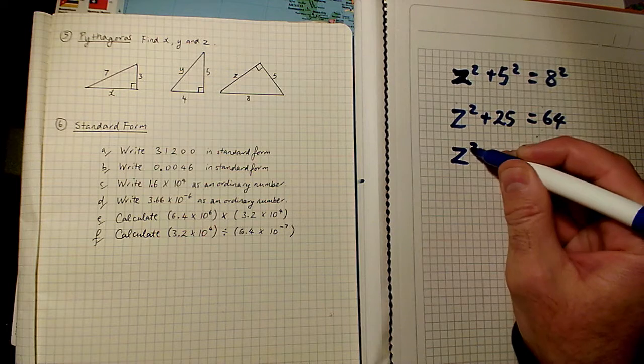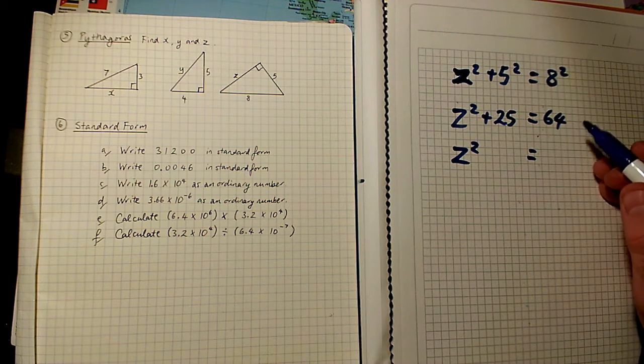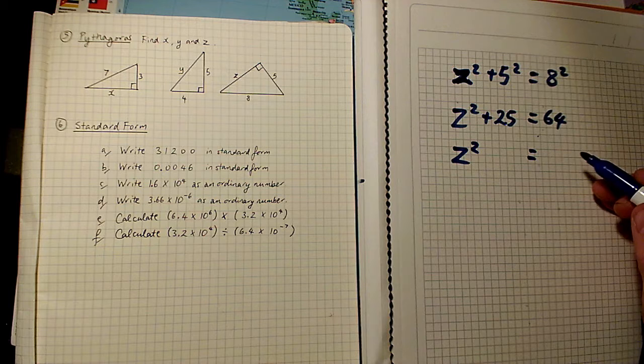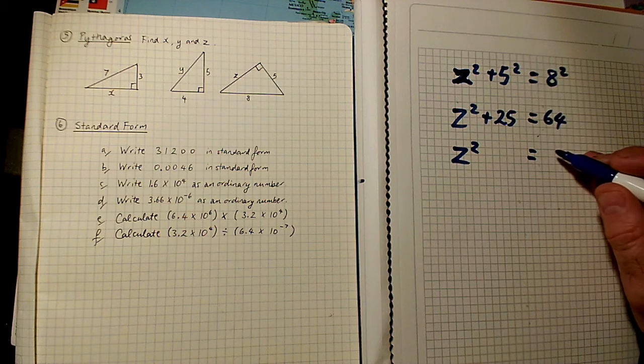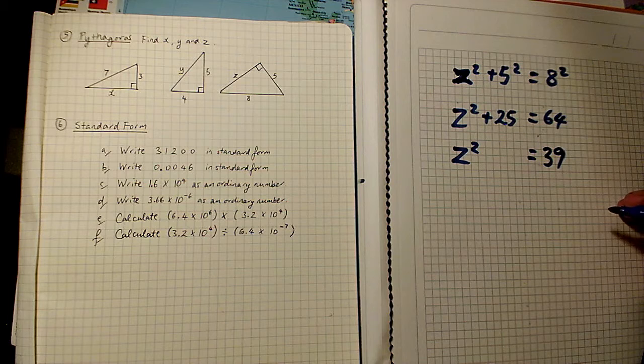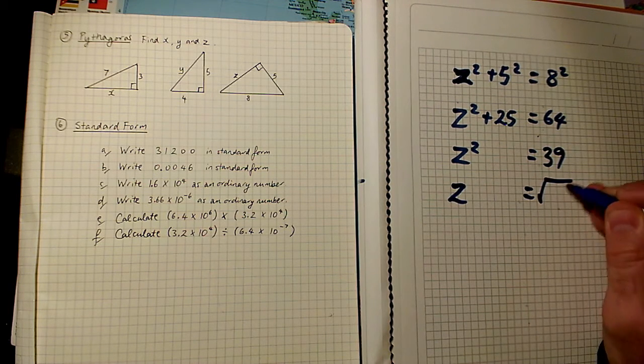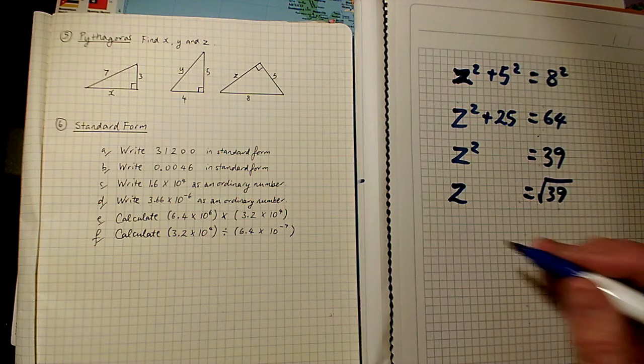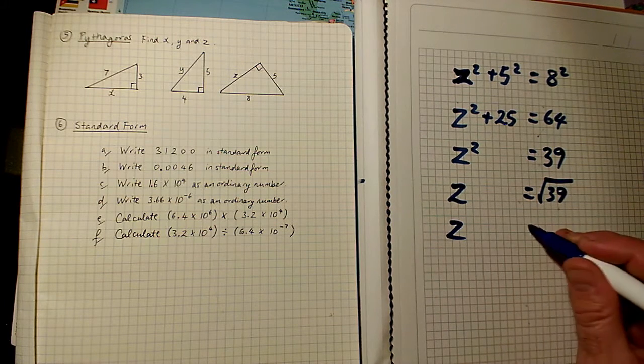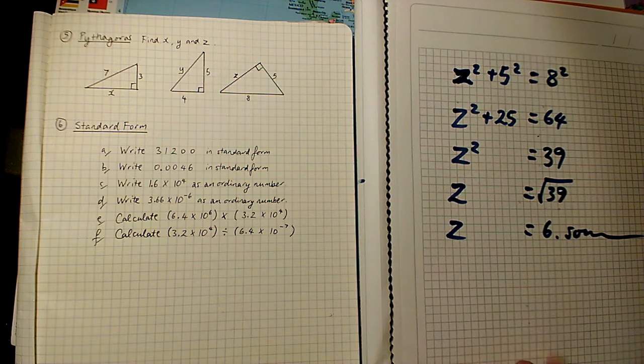So z squared plus 25 equals 64. Working out those squares. Then I'm going to take away the 25 from both sides to get the z bit on its own. So 64 minus 25 is 39. Let me just double check that. 50, 64, yes. So z has got to be the square root of 39, which is 6 point something, which you can work out on a calculator.